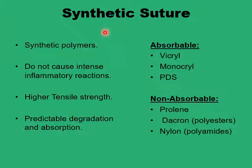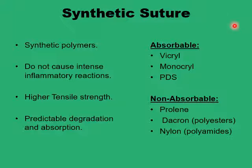Synthetic sutures, mostly polymers, don't cause intense tissue reactions, have much higher tensile strength, and degrade and absorb in a very predictable way. They are provided in either an absorbable form — such as vicryl, monocryl, and PDS — or a non-absorbable form — including prolene, dacron, and nylon.